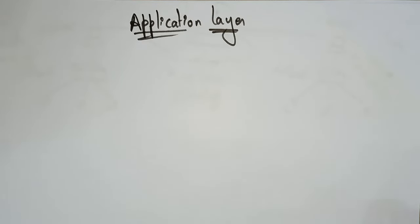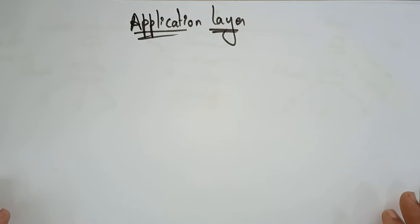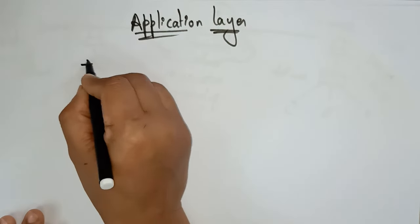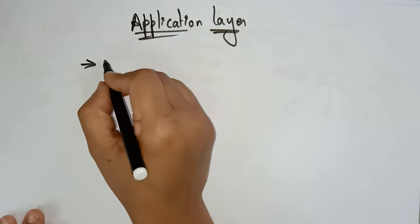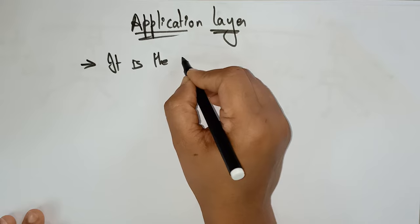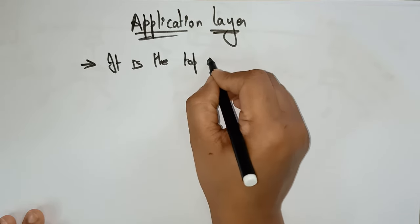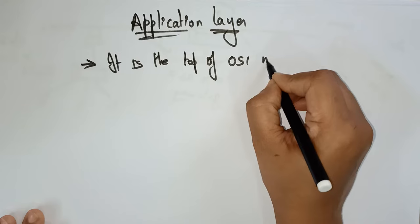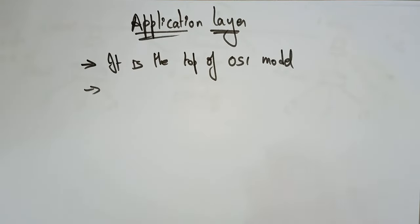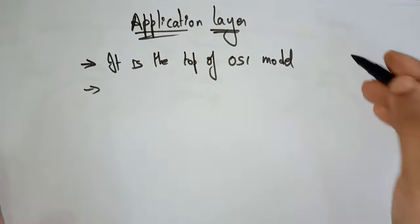Hi students, welcome back. Coming to the next topic in computer networks is the application layer. So far you have seen the different layers. Now let's have a look at the last layer, that is the application layer. It is present at the top of the OSI model — it is the topmost element — and it is a layer through which users can interact.